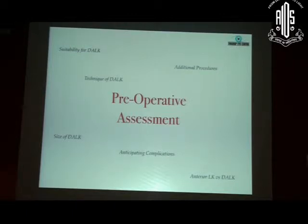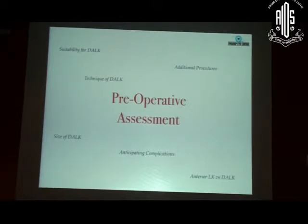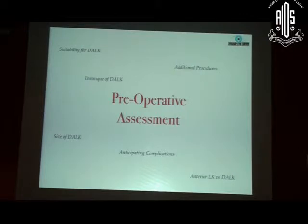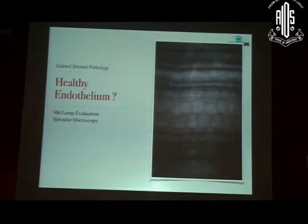How large does your trephination need to be? How large is the graft you need to put? Do you need to anticipate any complications during this procedure? Can we assess preoperatively that you are likely to have a perforation? And do you need to go all the way down to Descemet's membrane or can you manage with an anterior or pre-Descemet's type of lamellar keratoplasty?